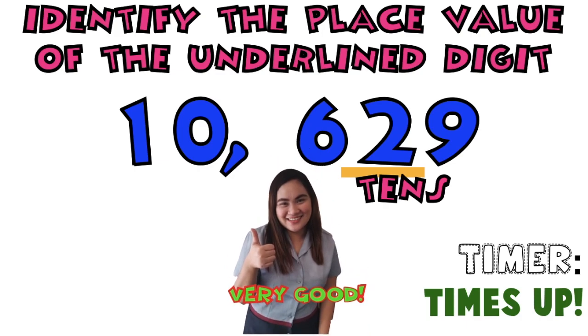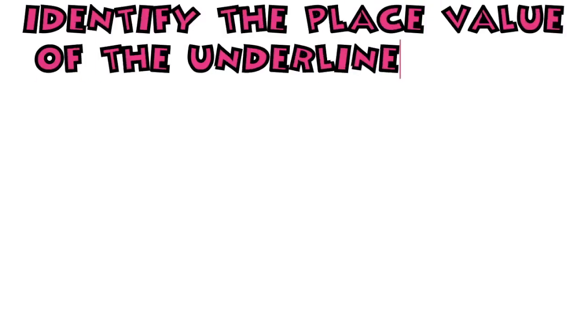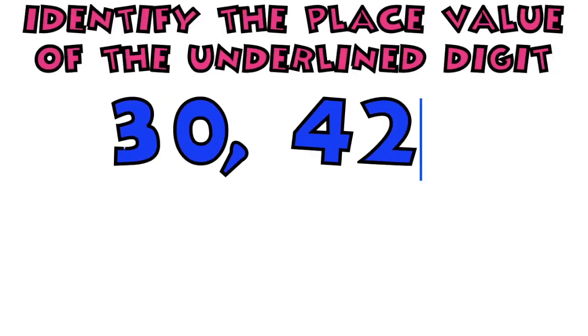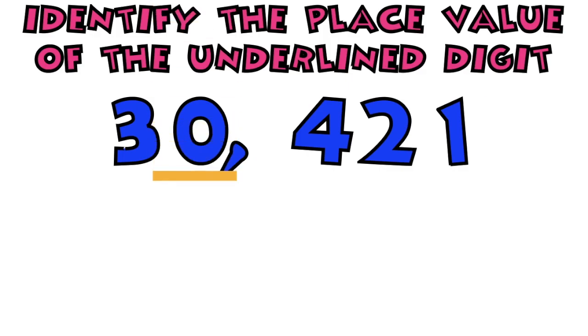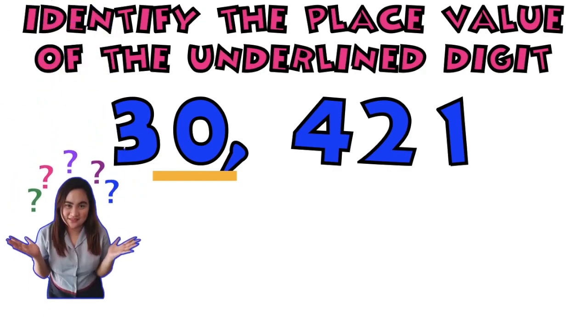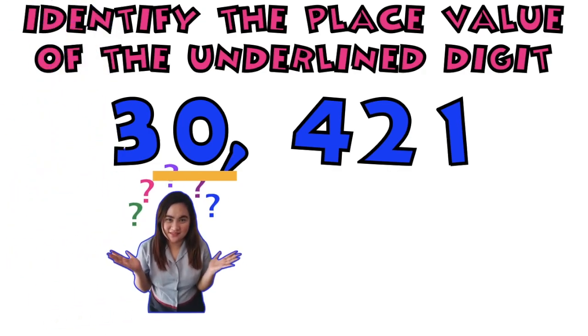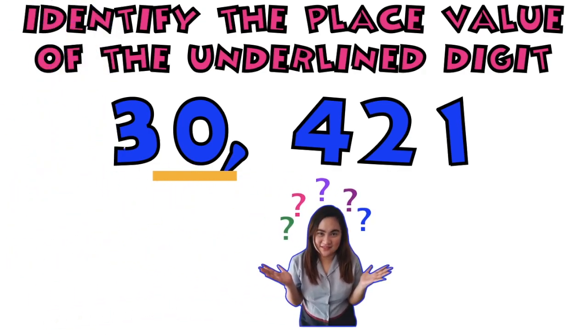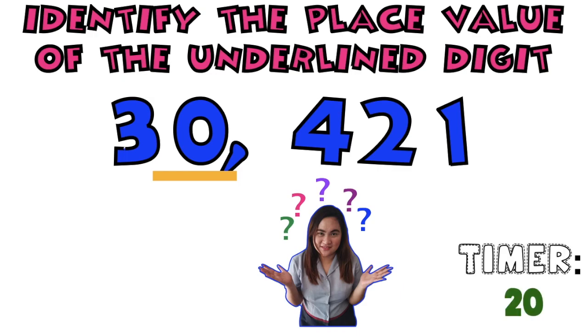Let's have number 4. I have here 30,421. What is the place value of digit 0? Timer starts now.